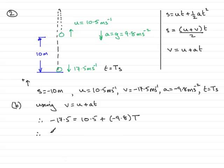Working this out, we have minus 17.5 equals 10.5 minus 9.8 t. Rearranging this by adding 9.8 t to both sides, and if I add 17.5 to both sides, then we're going to have 10.5 and 17.5, so that's going to be 28. Divide both sides now by 9.8, and you have t equals 28 over 9.8.